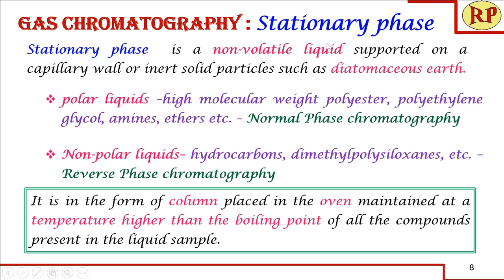The stationary phase is a non-volatile liquid supported on a capillary wall or inert solid particles such as diatomaceous earth, silica, alumina, or fused silica. If the non-volatile liquid is polar — such as high-molecular-weight polyesters, polyethylene glycol, amines, or ethers — then polar components in the mixture have more affinity towards the stationary phase and less polar components come out first. This is called normal phase chromatography.